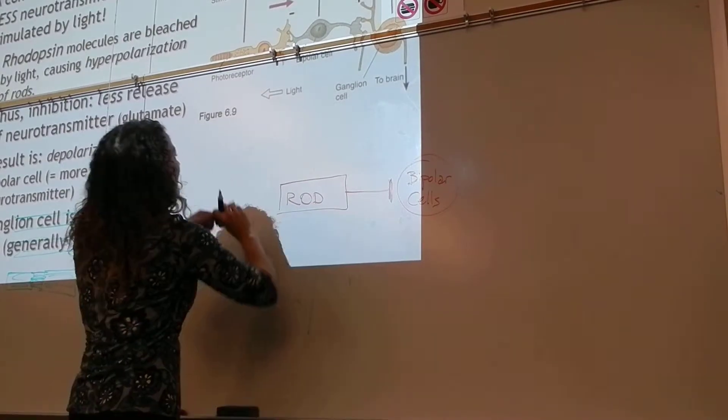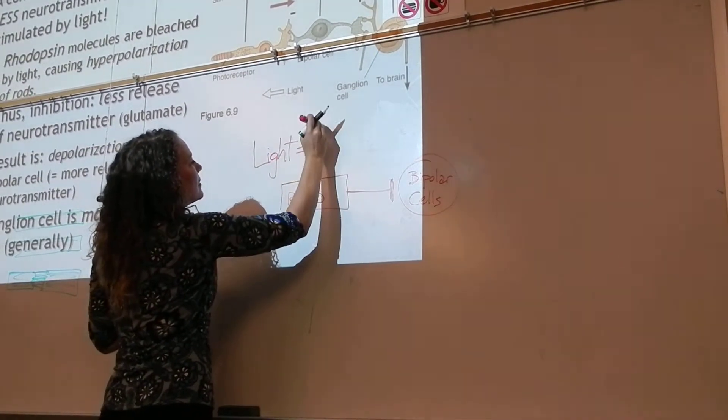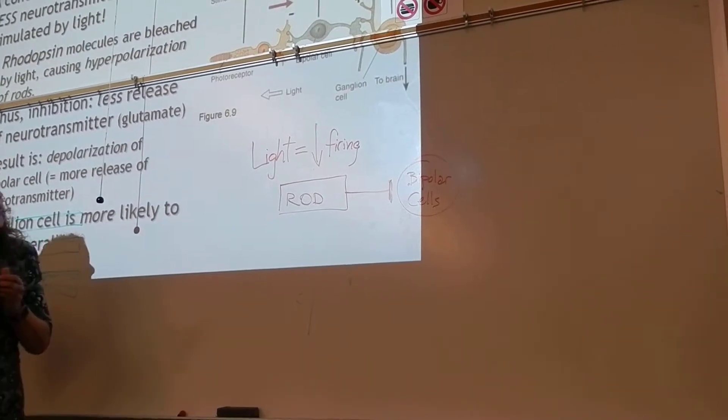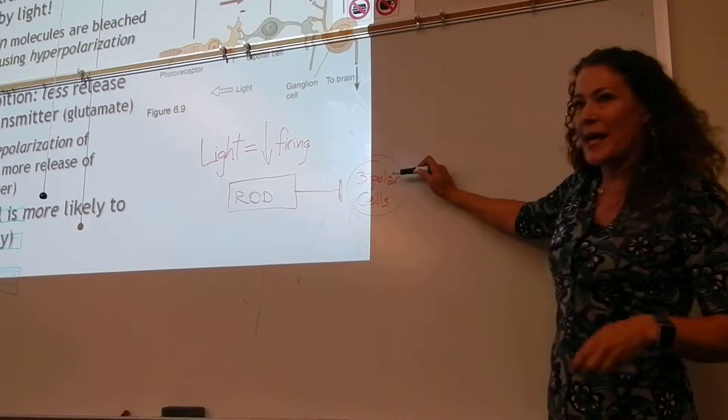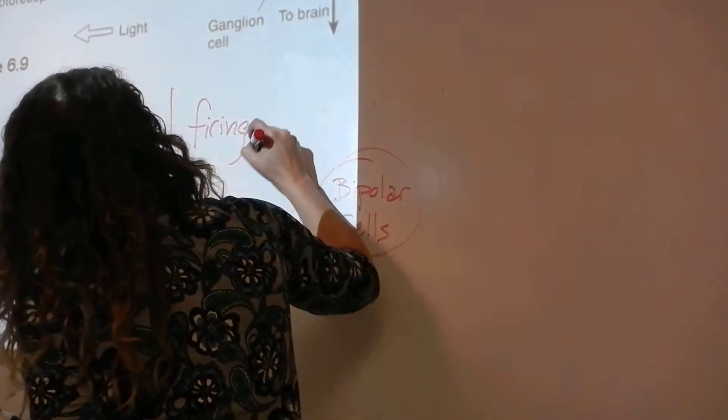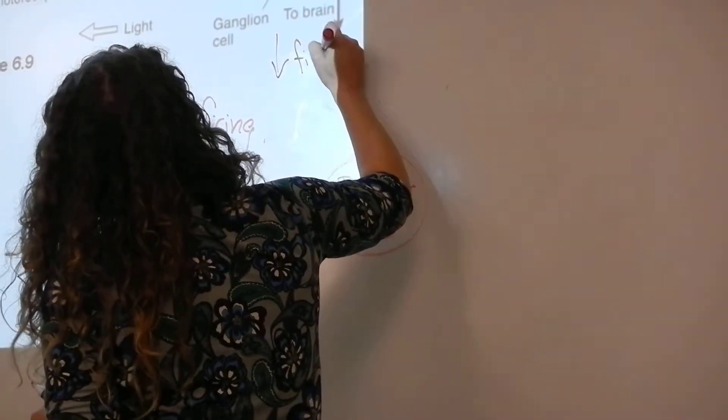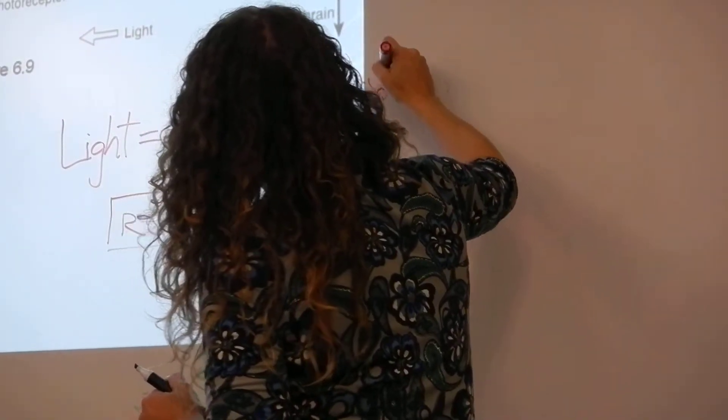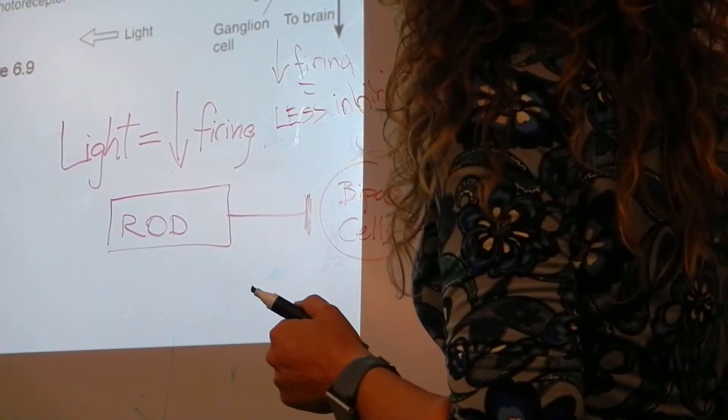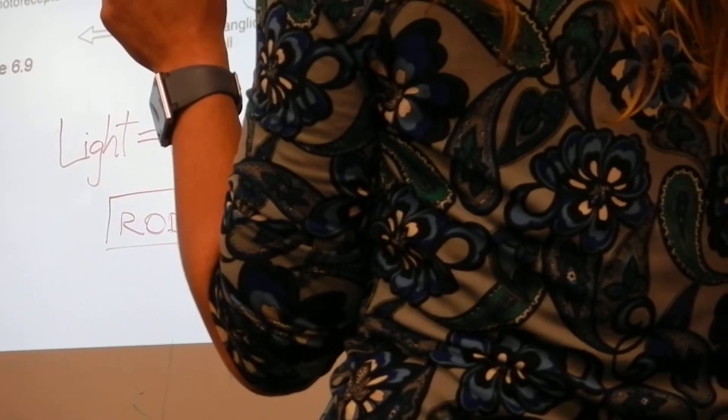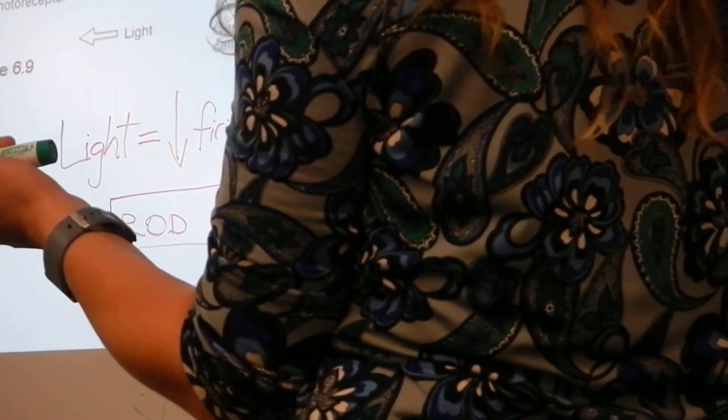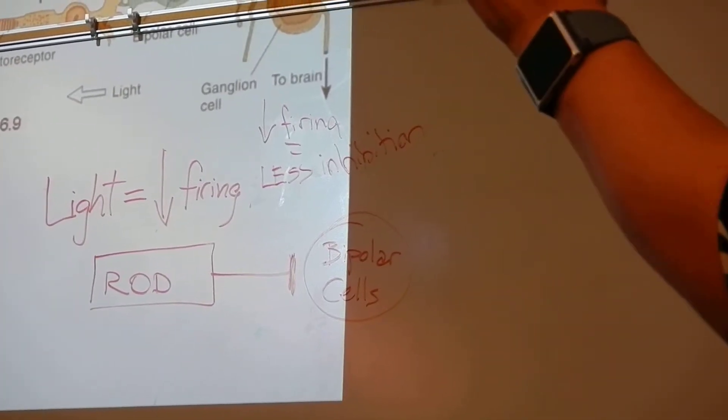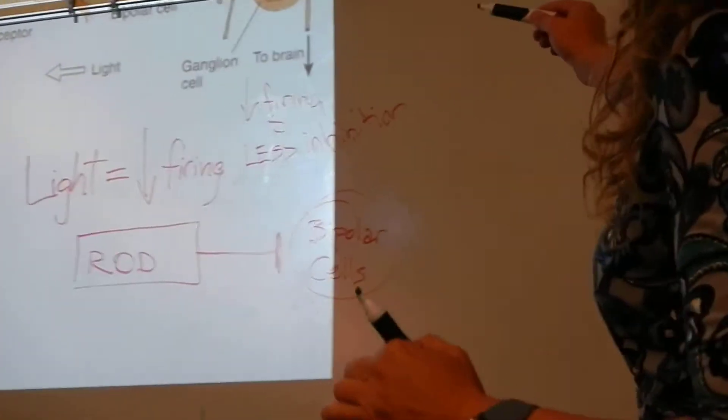Light equals less firing. Okay? Now, less firing is going to result in more or less inhibition here. Less inhibition. Less firing equals less inhibition.